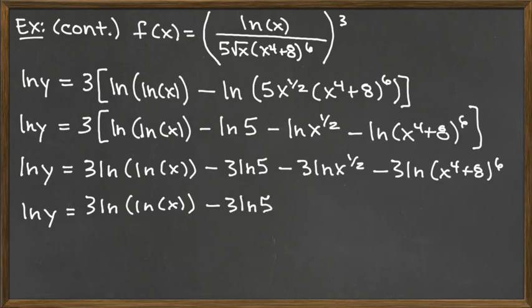But then this next one does. We have the 3 times the natural log of x to the 1 half. So really when I bring down that 1 half power, I would have 3 times a half. So I'm just going to go ahead and write that as 3 halves times the natural log of x. And then the last term has the power of 6. So I do have that multiple 3 that's sitting there. And when I bring the 6 down front, I'd have the 3 times the 6 would be minus 18. And then I've got the natural log of x to the 4th plus 8.